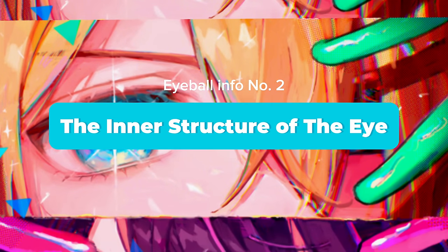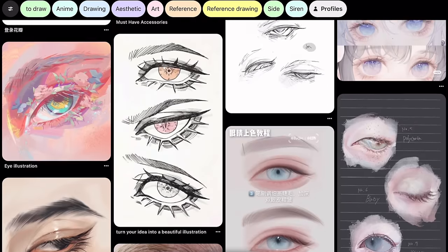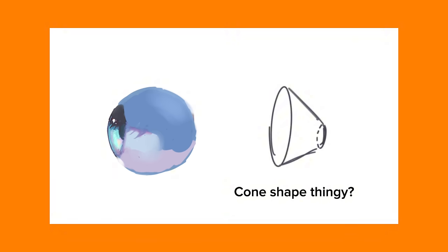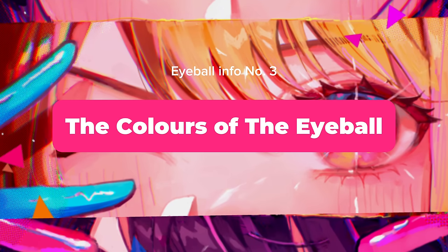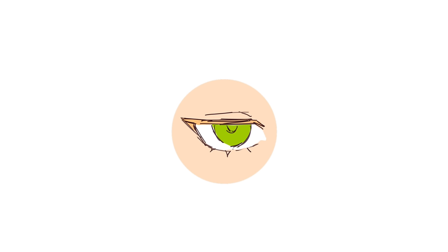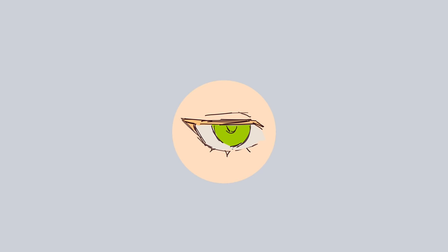Secondly, the inner structure of the pupil. This is probably the one that I see people look past the most. The structure of the pupil is actually a circular cone-shaped form where the pupil is sunken into the eye. That's right — the pupil from the outside looks like it's protruding outward, while the opposite can be said for the inside of the eye. Third, the colors of the eye. The sclera of the eye is not white — it's actually grey, sometimes accompanied with a pinkish hue.